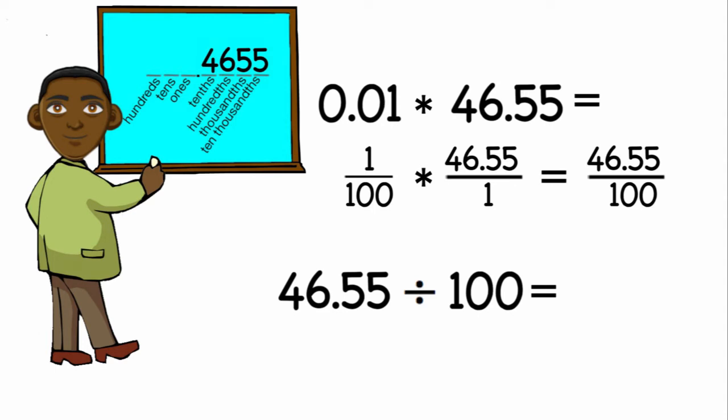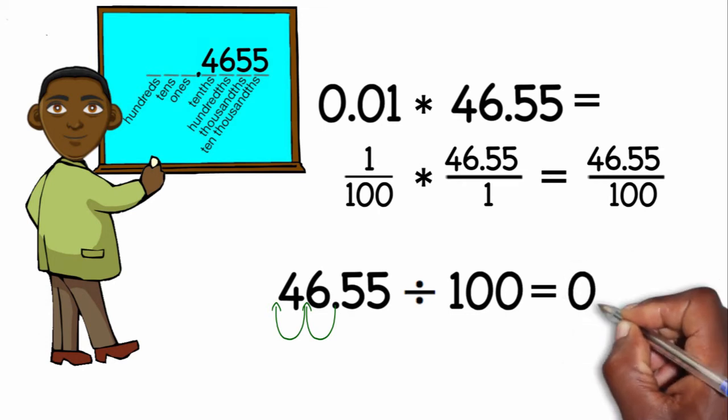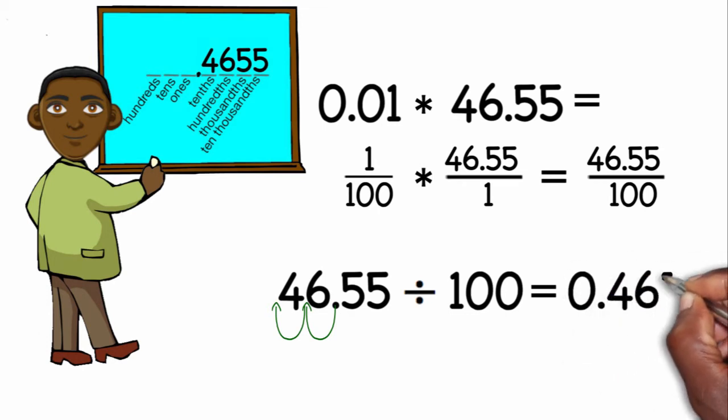Dividing by 100 moves the decimal point two spaces to the left. So my final answer is 0.4655 — that's 4,655 ten-thousandths.